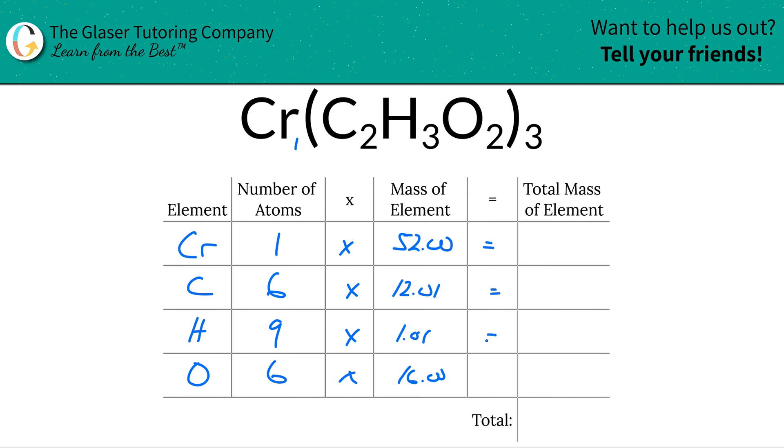Now, all we have to do to find the total mass of each element in the compound is multiply this row across. So the total mass of chromium in that compound is going to be 52. The total mass of carbon is going to be 6 times 12.01, which works out to be about 72.06. Then for hydrogen, same thing, multiply it across, that's 9.09. And then oxygen, again, 96.